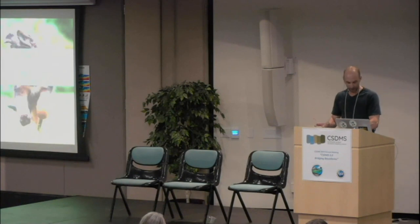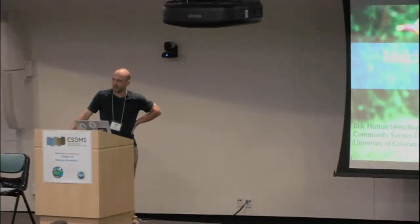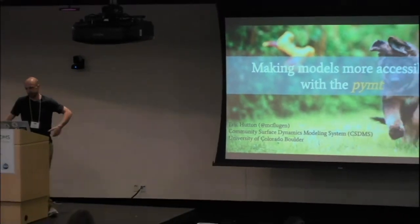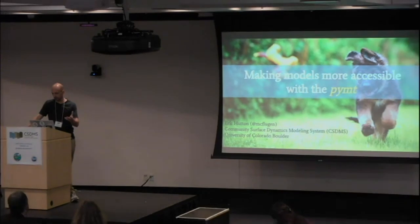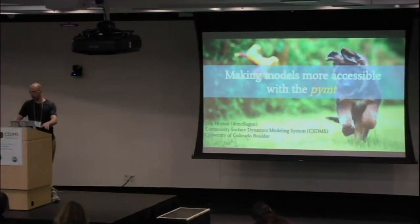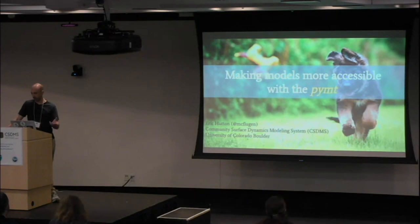First, what is accessibility? Some definitions: easily obtained — we want that in our models. CSDMS has done a good job of that, getting together a collection of models on GitHub and some model metadata on our website. But with PyMT we want to bring that to the next level, so people can programmatically look for models, ask models what they provide, and search models for what they provide or what they use.